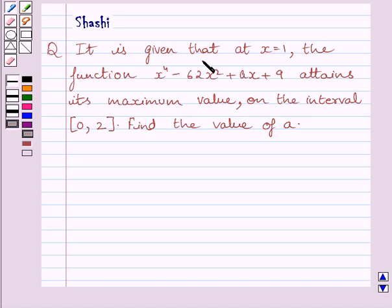Question says, it is given that at x equal to 1, the function x raised to the power 4 minus 62x square plus ax plus 9 attains its maximum value on the interval [0, 2]. Find the value of a.